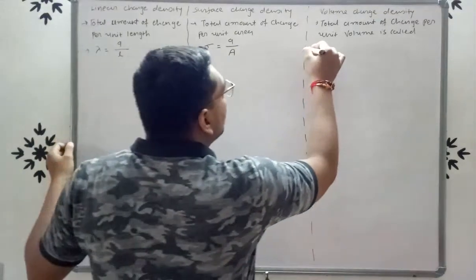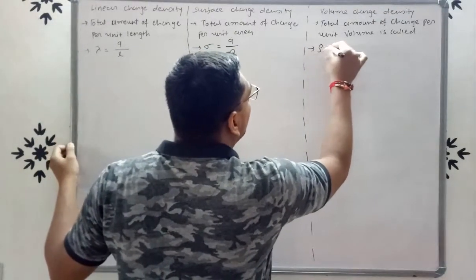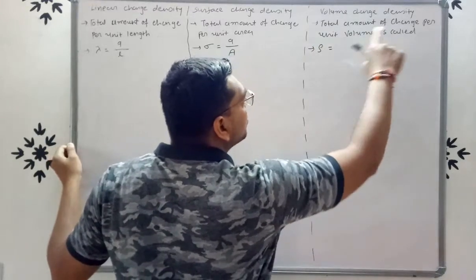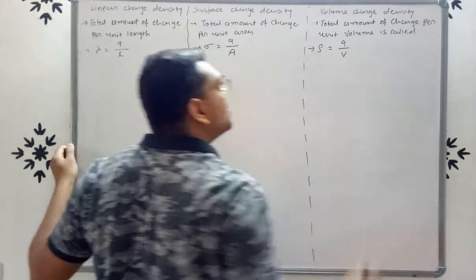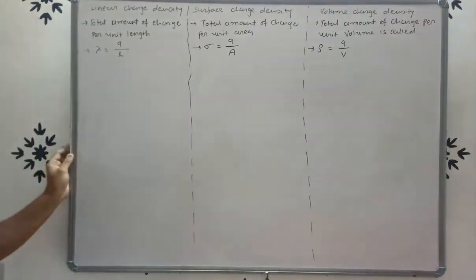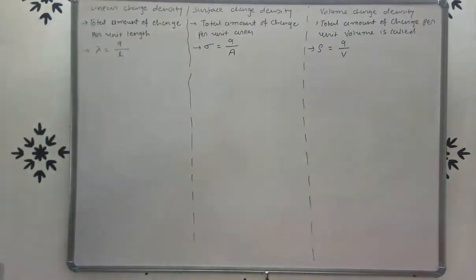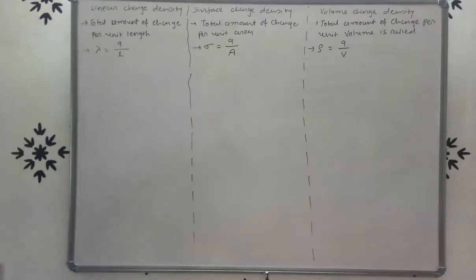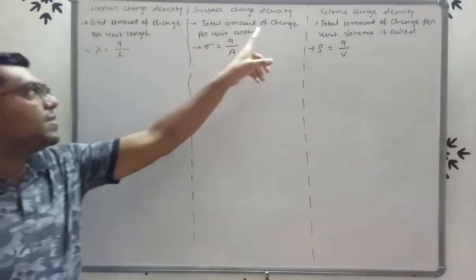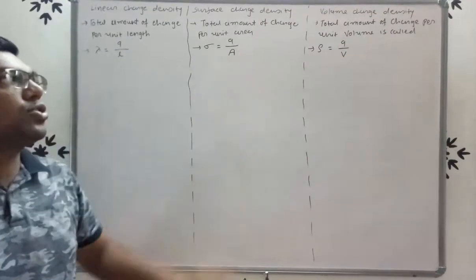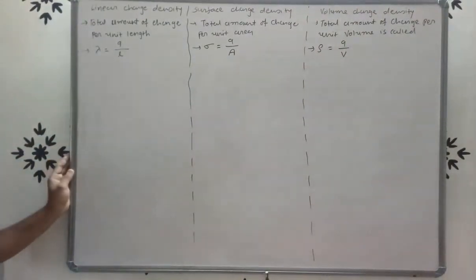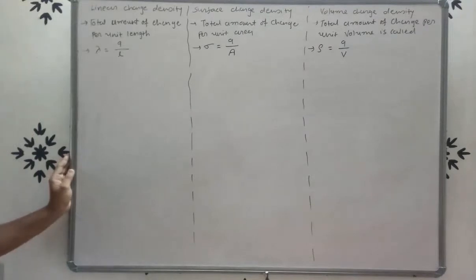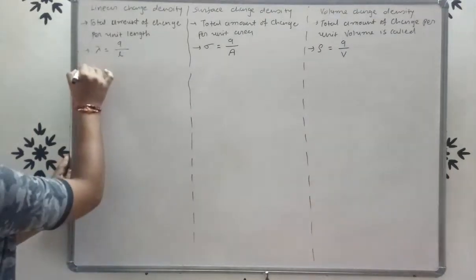Volume charge density is given by rho (ρ). So rho equals total charge Q per unit volume: ρ = Q/V. To summarize the formulas: lambda equals Q divided by L, sigma equals Q divided by A, and rho equals Q divided by V.